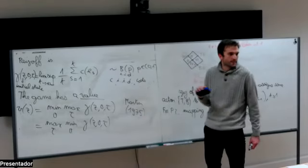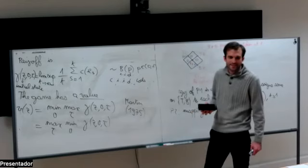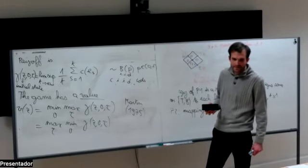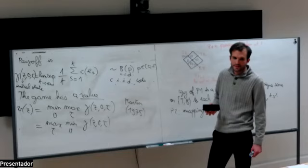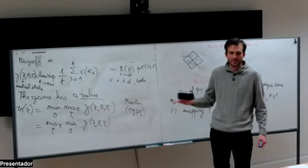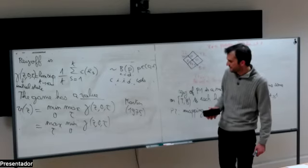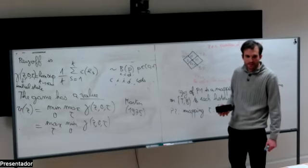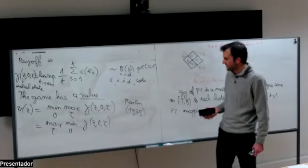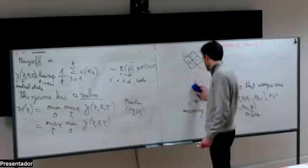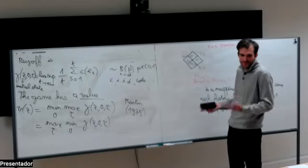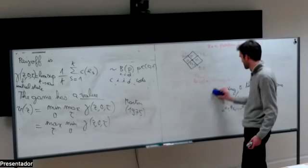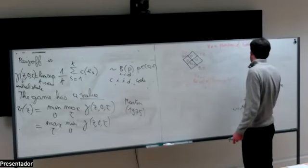Players choose sequentially, and each can depend on the whole history of what the other player has done. The history of edges allows you to recover everything that happened. Player two uses the history of all choices made before, and player one also looks at all choices player two has made. You may think you shouldn't have to remember all this — that you should always play according to where you are in a stationary way — but that's far from obvious and is actually an interesting question.